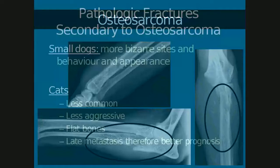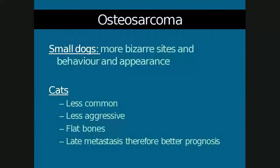Osteosarcoma can also occur in small dogs, though it is less common. They tend to have more bizarre sites, behavior, and appearance. Osteosarcoma in cats is also much less common and is a less aggressive type of tumor. Flat bones are more commonly affected in cats and it has a better prognosis because metastasis is much later than in the dog.